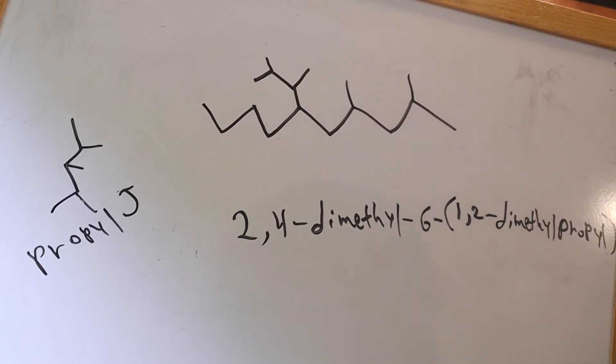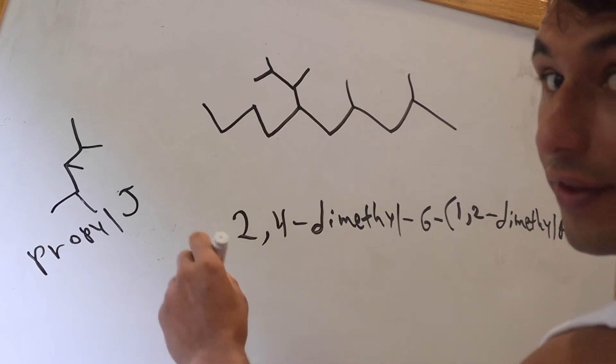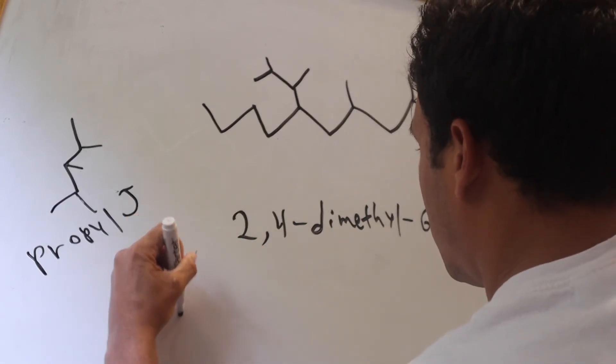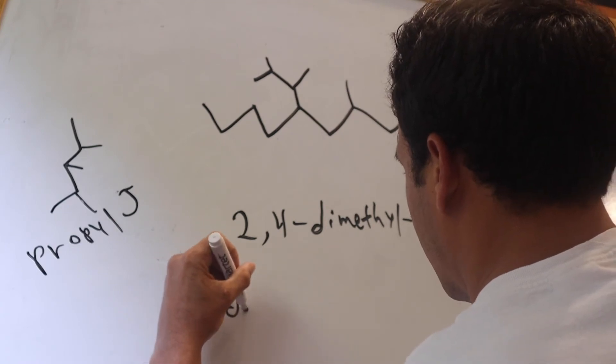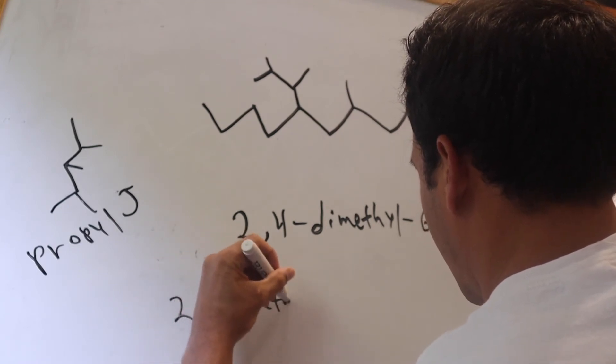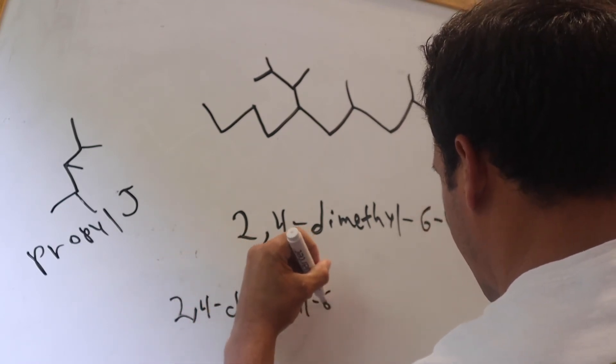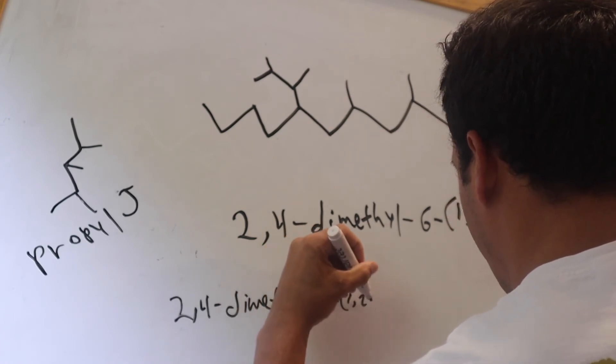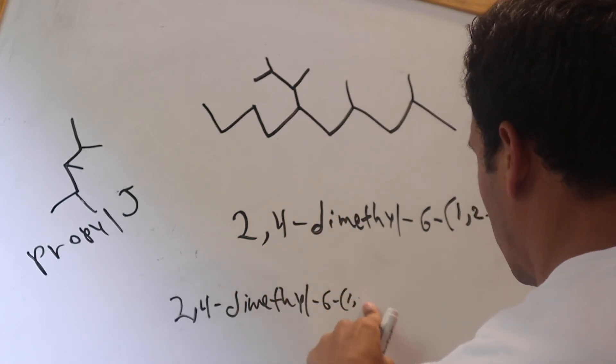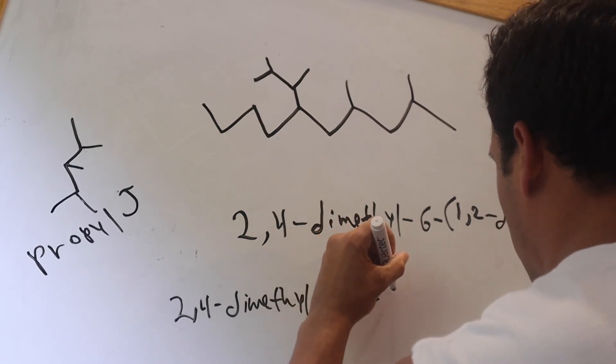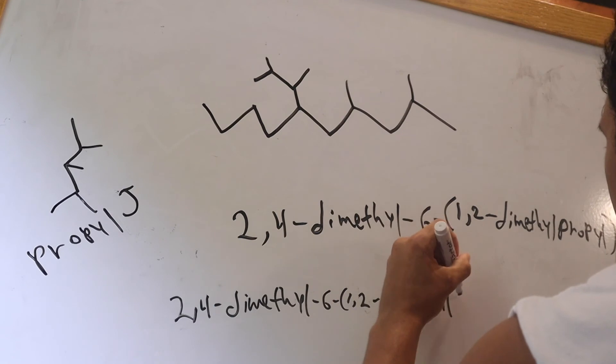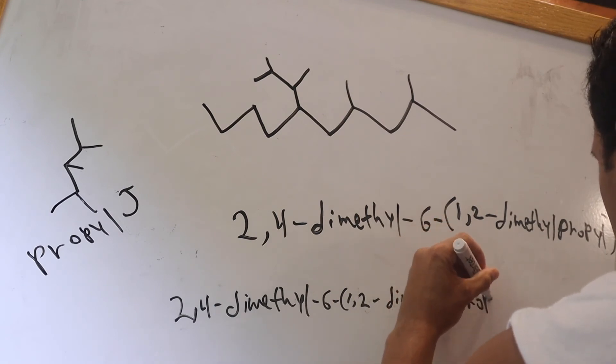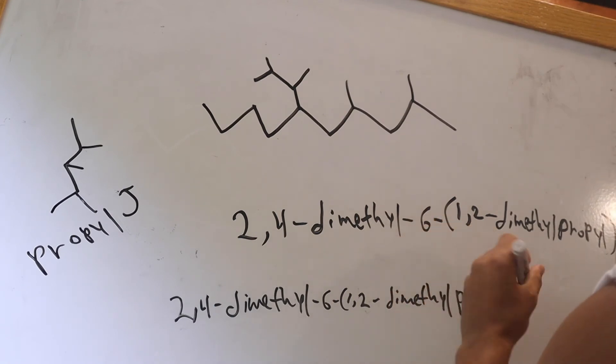And then, so wait, so so far we have 2,4-dimethyl, and then that's when we put decane, right?